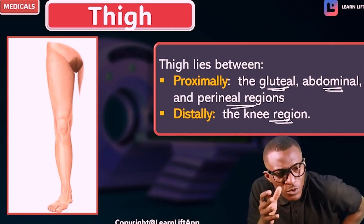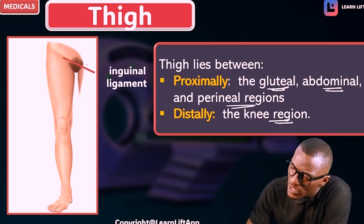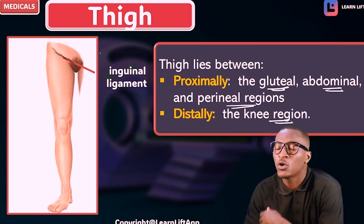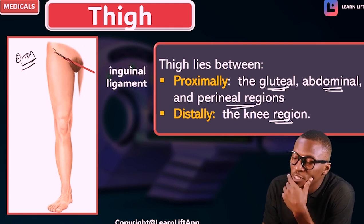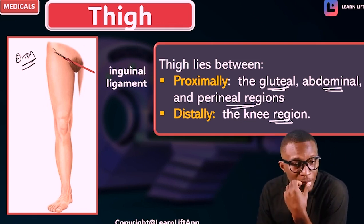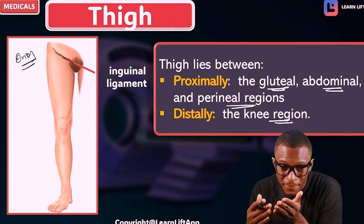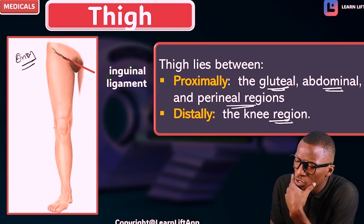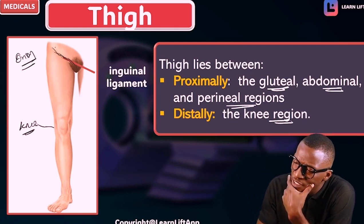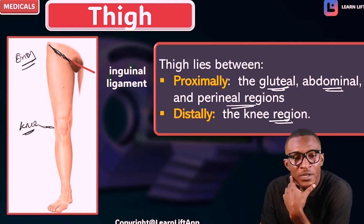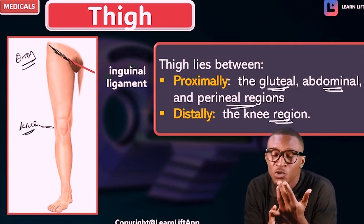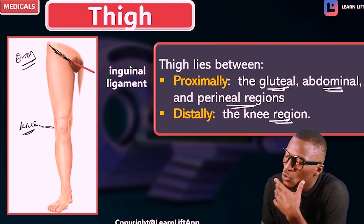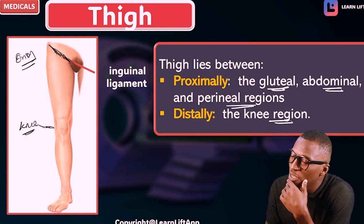Now let's look at the diagram. This imaginary line you are seeing is what we call the groin, also called the inguinal ligament. The groin or the inguinal ligament is the landmark. And this part is what we call the knee. So between the groin and the knee is where we have the thigh. Above the groin is where we have the abdominal region.